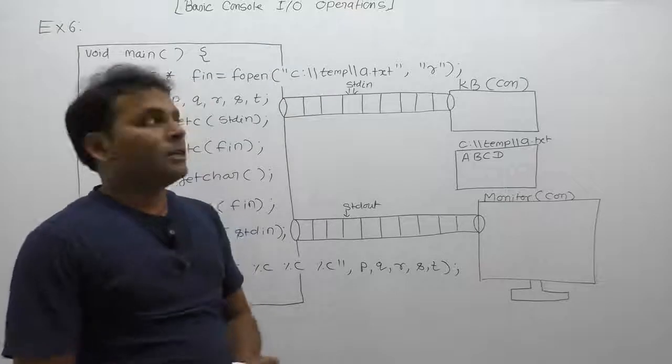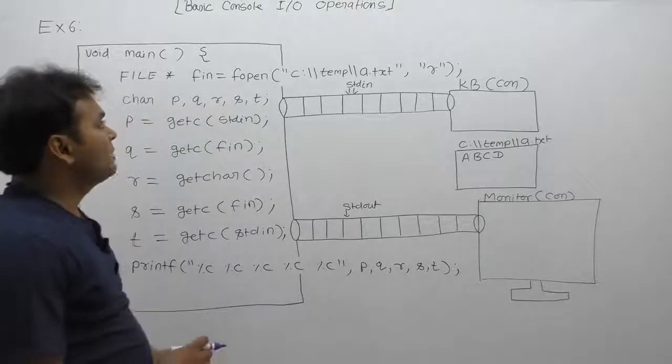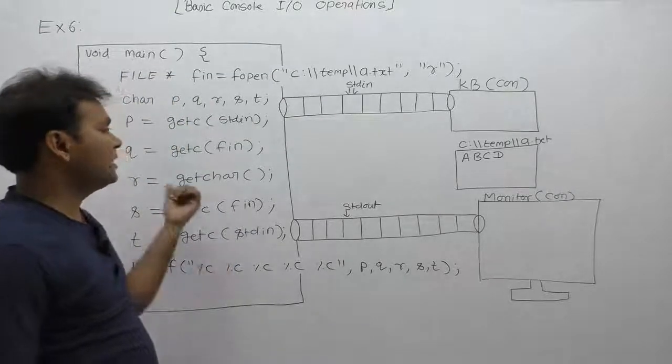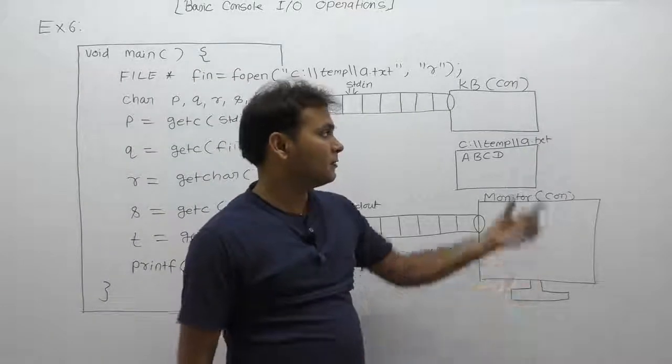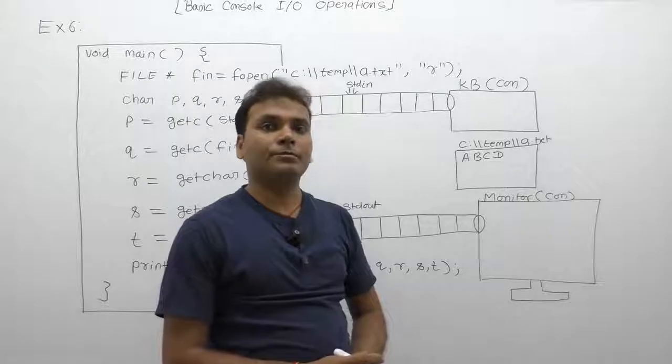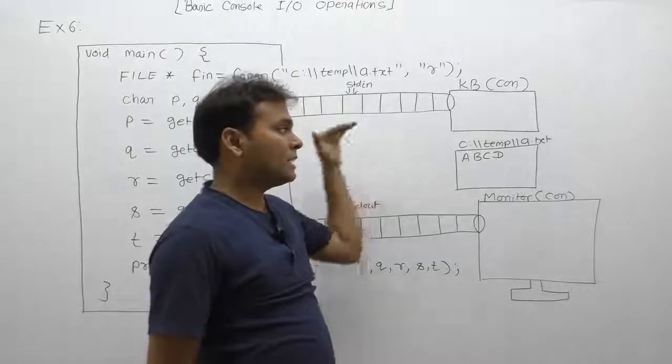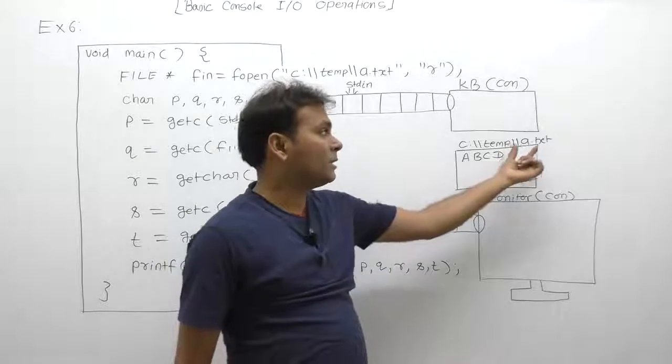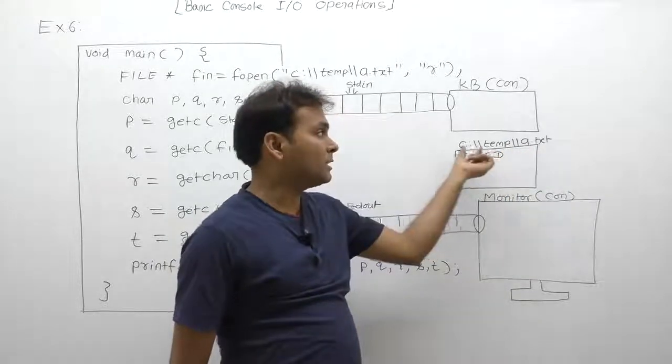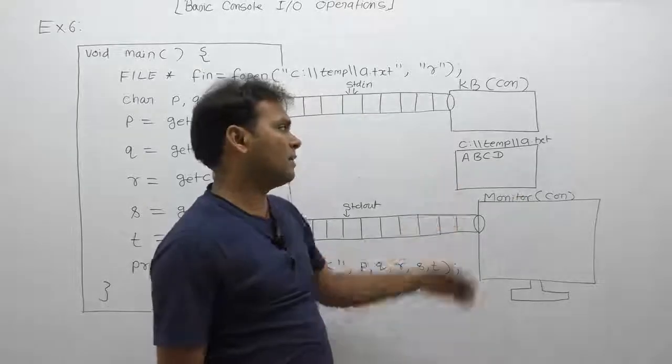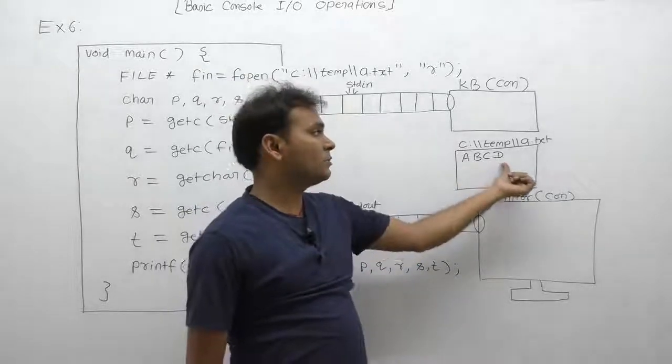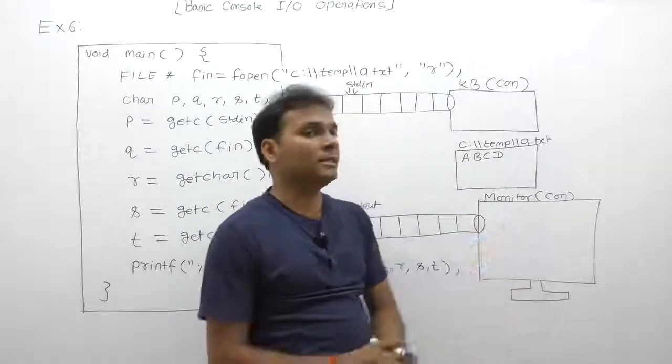Let's see another example regarding different flavors of getc and getchar function. Here we are using one more extra case file a.txt. Before executing this application, create some extra file a.txt in your system inside C drive temp directory or any path. Then this file can have initial characters. Enter something: a, b, c, d. This is the program we are going to execute.